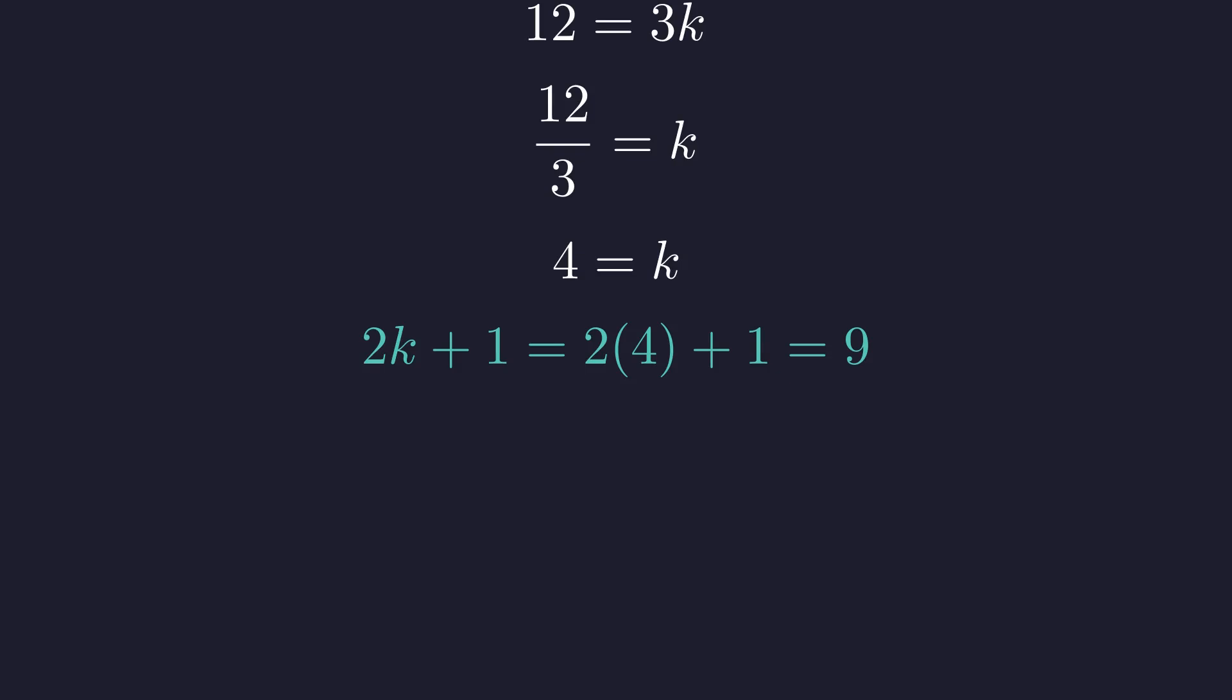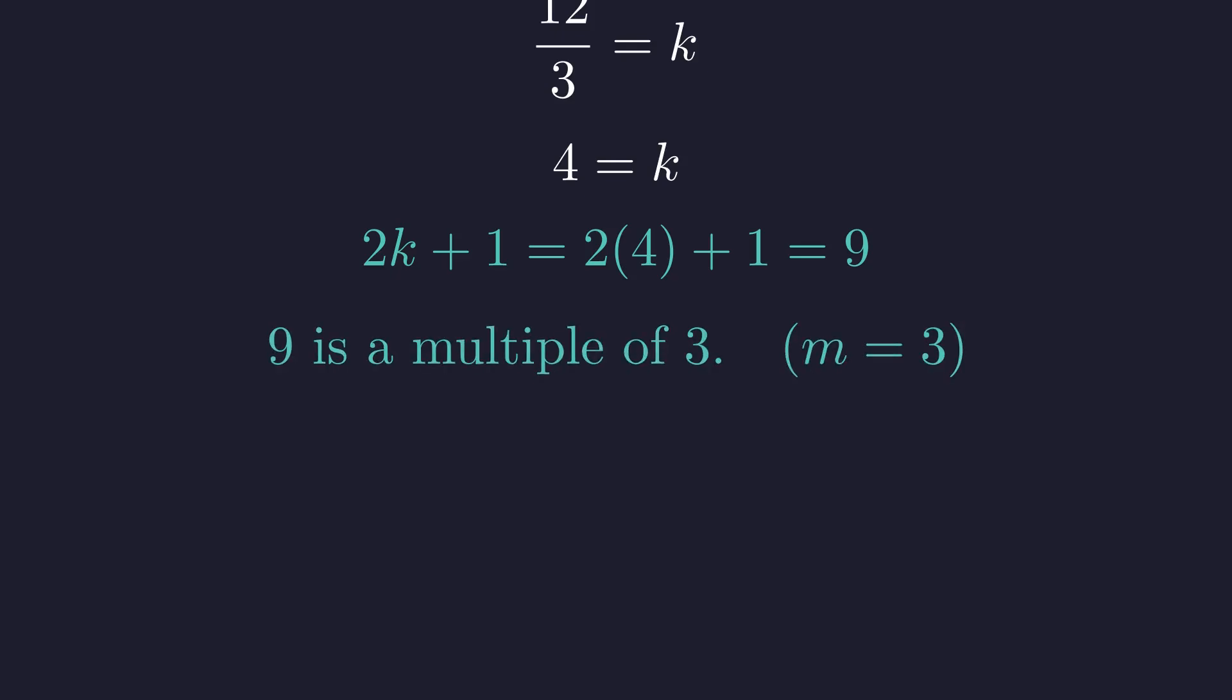We now substitute k equals 4 into our derived constraint 2 times k plus 1. This gives 2 times 4 plus 1, which equals 9. 9 is indeed a multiple of q, which is 3. Thus, the constraint holds for our solution.